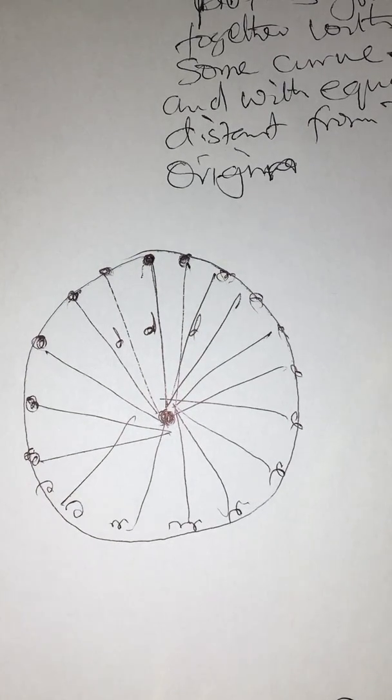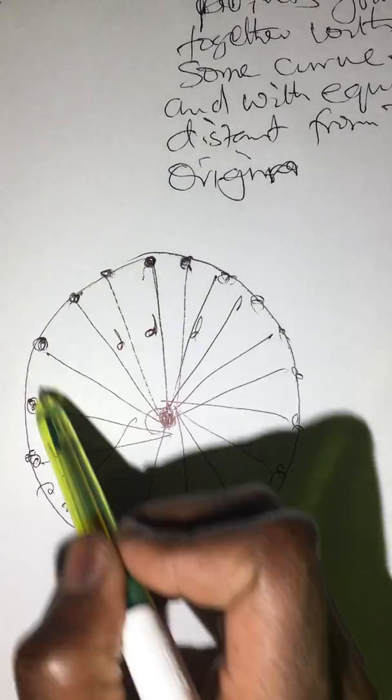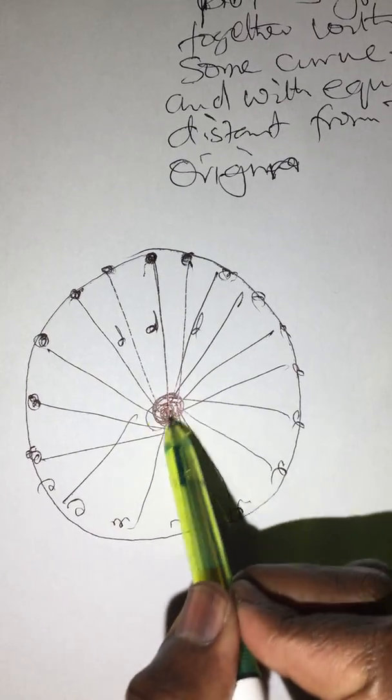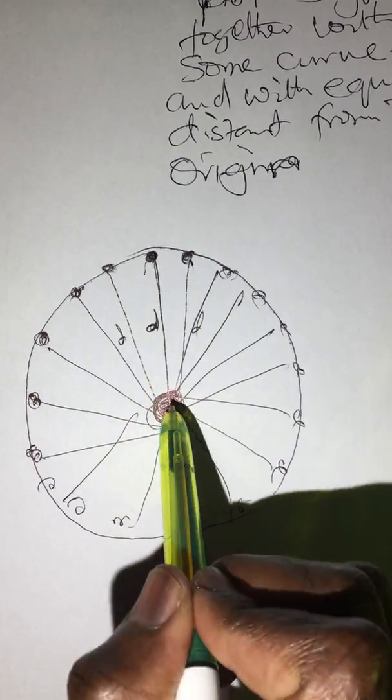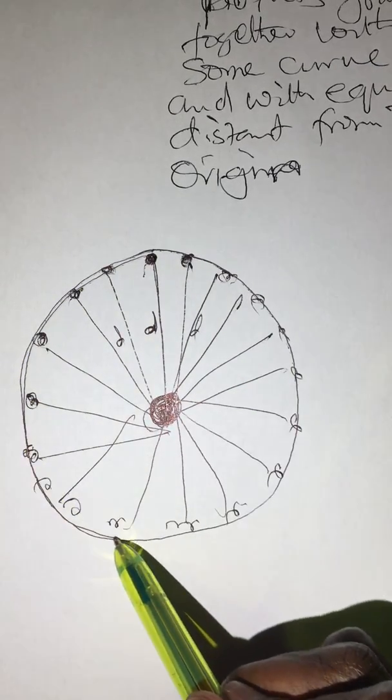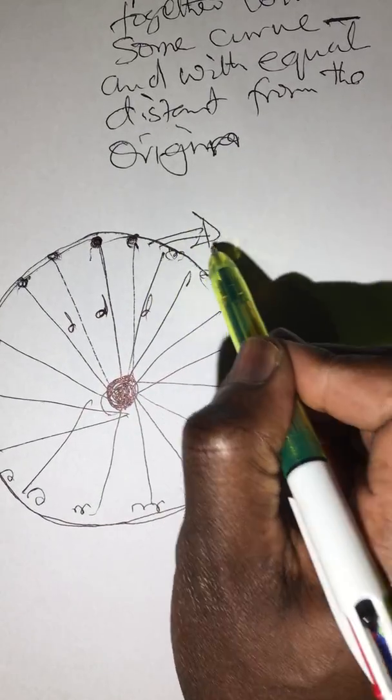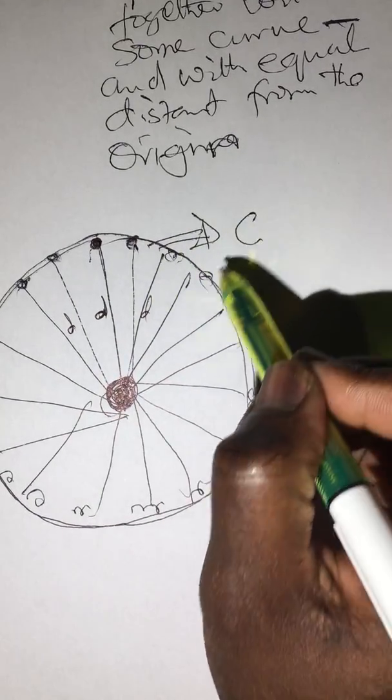That's why circle is a set of points joined together by a common distance to the origin, and they have a single curve joining them. Now from here, this curve is the circumference of the circle,